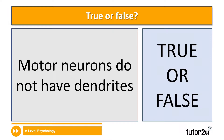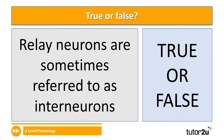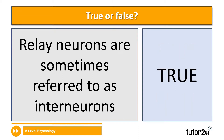Next question: motor neurons do not have dendrites — is that true or false? That one's true. Remember, we said that AQA refer to them as relay neurons, but in some resources you may see a relay neuron referred to as an interneuron.